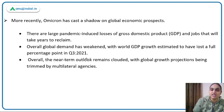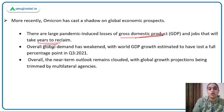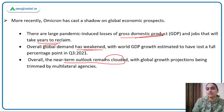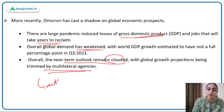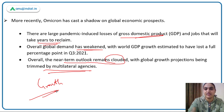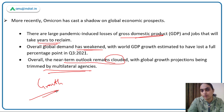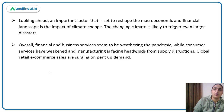Omicron has cast a shadow again on global growth prospects — GDP is getting affected and growth will take years to reclaim. Global demand has weakened again and GDP growth has lost major percentage points. Near-term outlook remains clouded; global growth projections have been trimmed by multilateral agencies, indicating that in the coming time the scenario is not good because of Omicron.